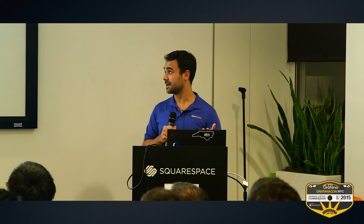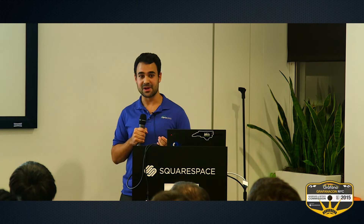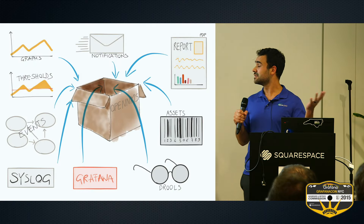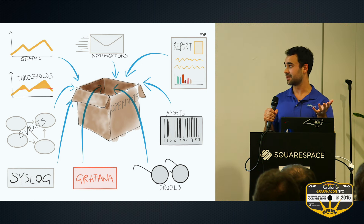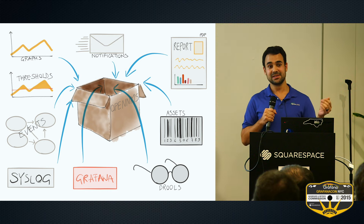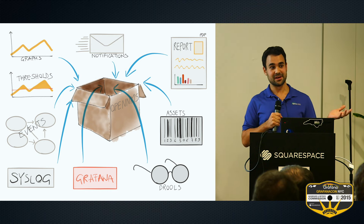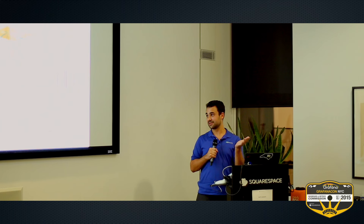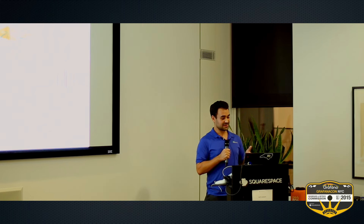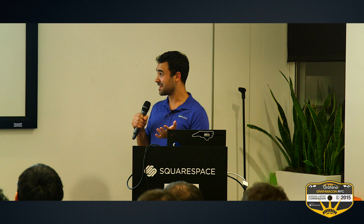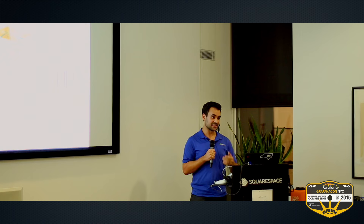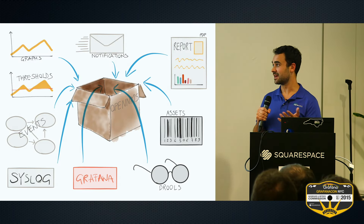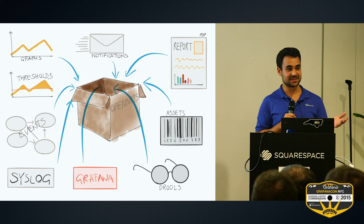A little bit about OpenNMS. OpenNMS has been around since about the year 2000, so it's a very mature product. It's a Java-based application you typically deploy on premise and supports a number of features out of the box. It will monitor your inventory doing fault management and performance management. For fault management, it can poll your devices every five minutes with a ping or something more complicated like synthetic transactions.